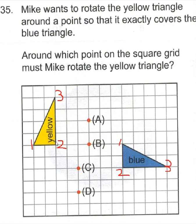I've actually labeled the points 1, 2, 3, which I'll explain why I've done that in a minute. Around which point on the square grid must Mike rotate the yellow triangle?